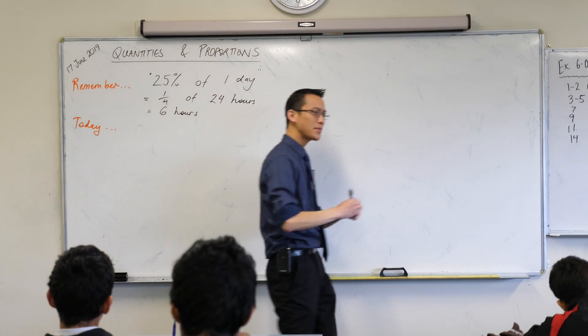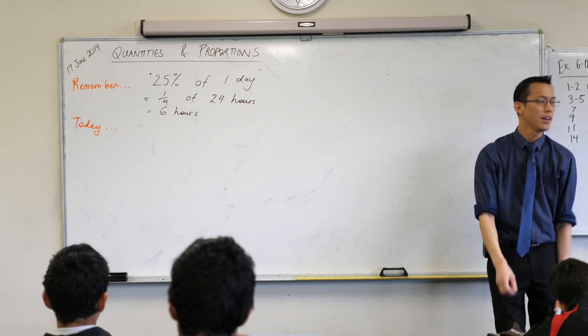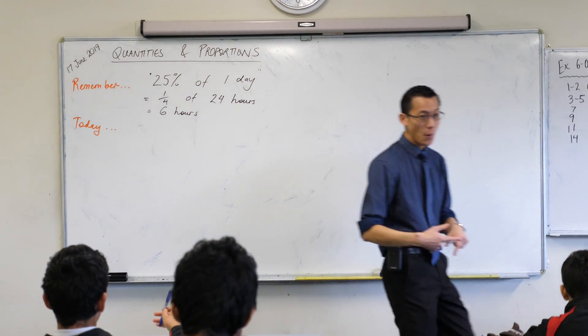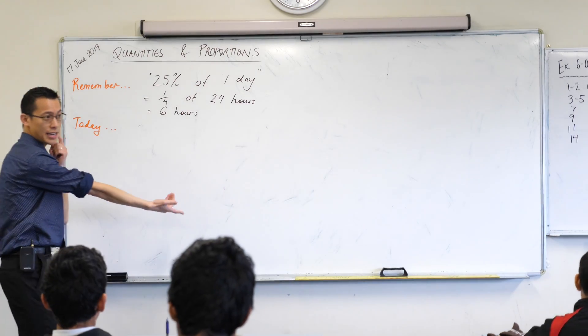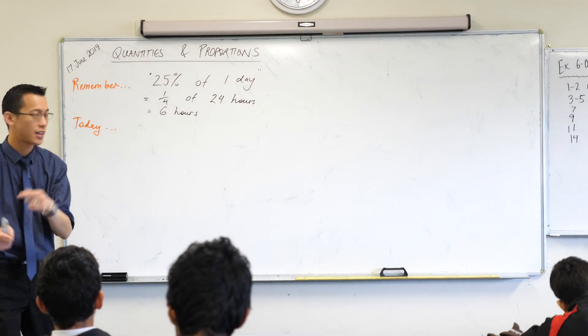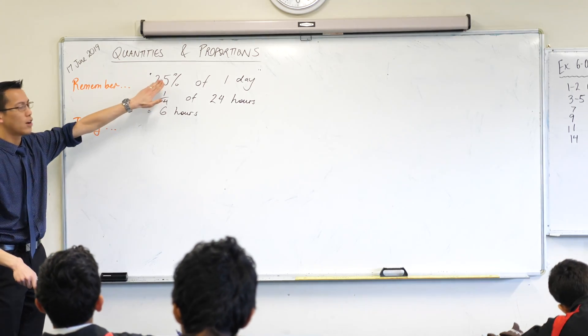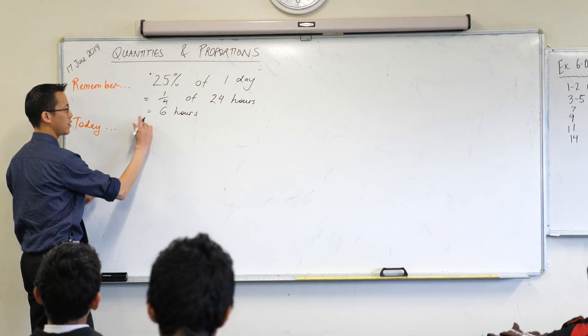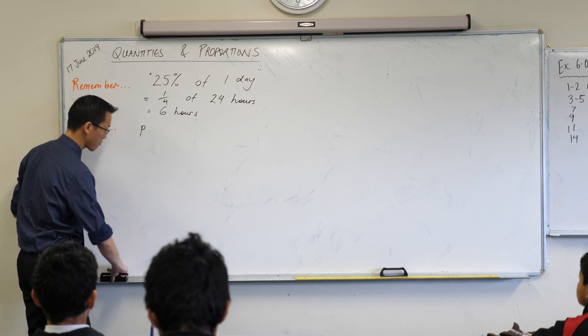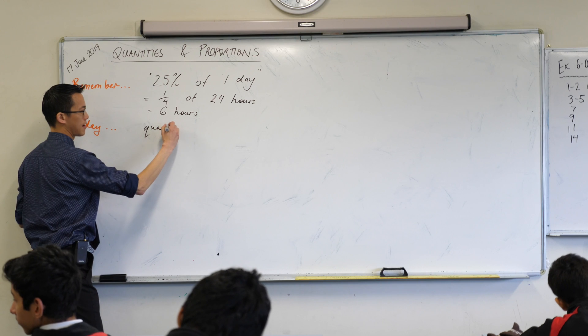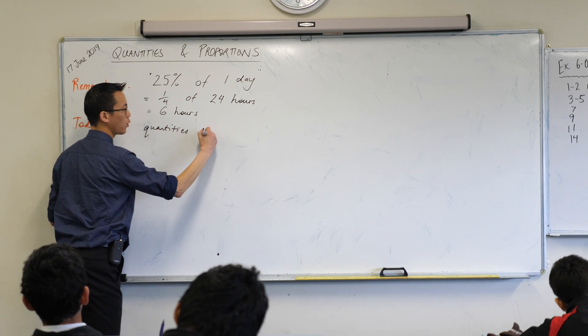Very good. That's six hours. So, importantly, a proportion of a quantity is just a different kind of quantity, a smaller one, usually. Now, today what we're going to focus on is the same idea but in the reverse order, and in fact you kind of just did it just now. Instead of thinking of a proportion of a quantity, we're going to think of quantities as proportions.